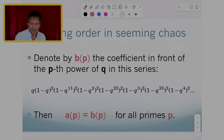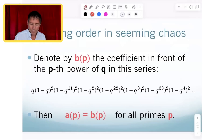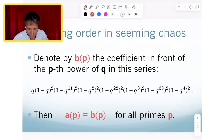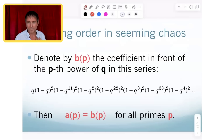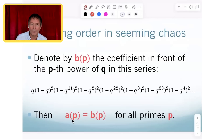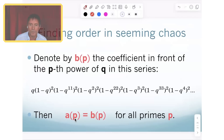One formula rules them all — we call it finding order in seeming chaos. If you take the coefficient of the power of Q in this infinite series, it will give you exactly this AP, which is P minus the number of solutions, for all primes.